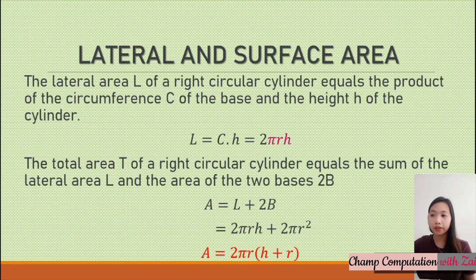For the total area, the total area of a right circular cylinder equals the sum of the lateral area and the two bases. In symbols, we have the lateral area, 2πrh, plus 2 multiplied by πr². Because the base can be computed as πr², to simplify the formula, we have the total area of 2πr the quantity h plus r.